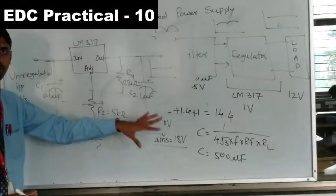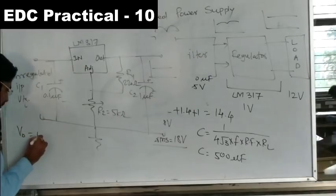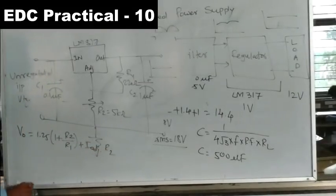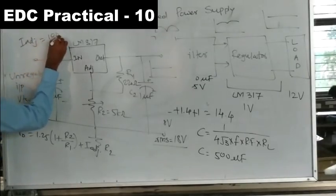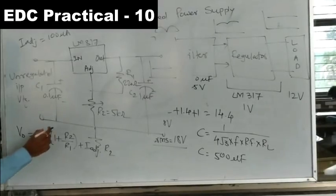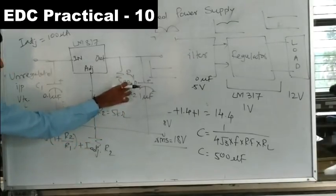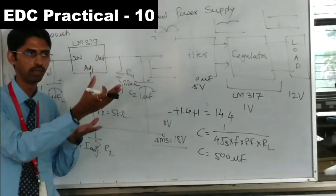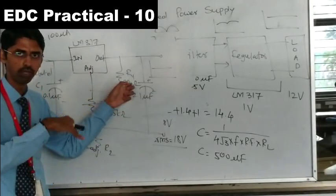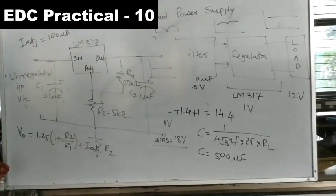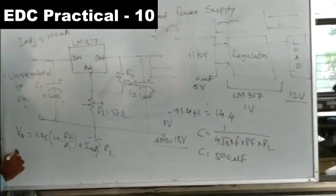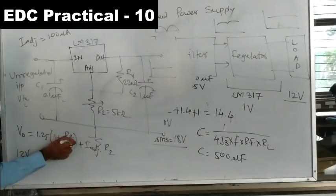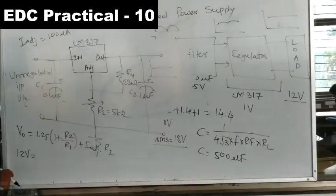R1 and R2 set the output voltage. R2 is a variable resistor (0 to 5kΩ potentiometer) allowing adjustment of output voltage. The output voltage formula from the LM317 datasheet is: Vout = 1.25 × (1 + R2/R1) + Iadj × R2, where the adjustable current Iadj = 100µA and R1 = 220Ω. By varying R2, we can obtain the desired output voltage.